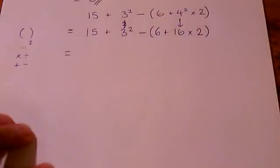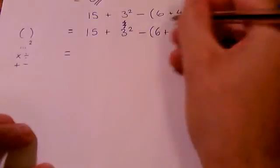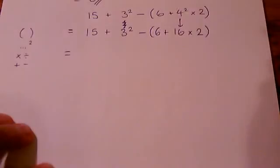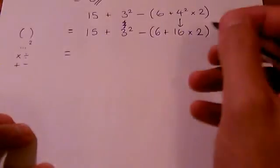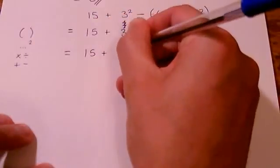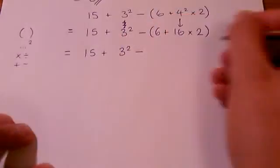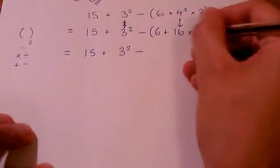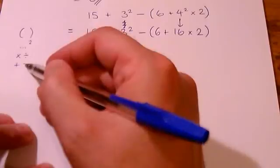Then, still within the brackets, because we haven't evaluated the sum in the brackets there. We haven't evaluated the calculation in the brackets there. So, we're keeping everything else the same. Within the brackets here, we've got to do the multiplication before the addition.